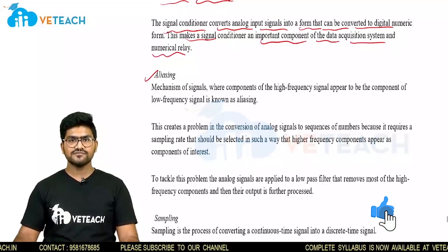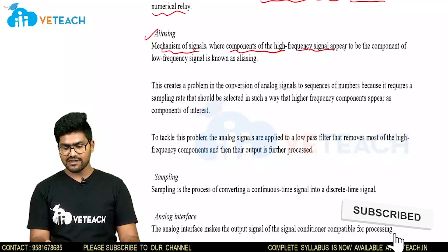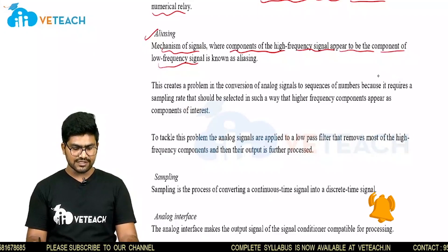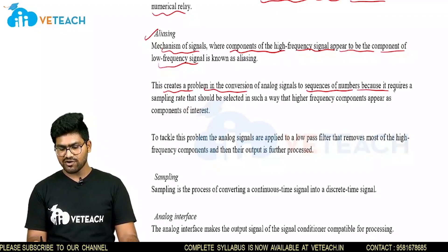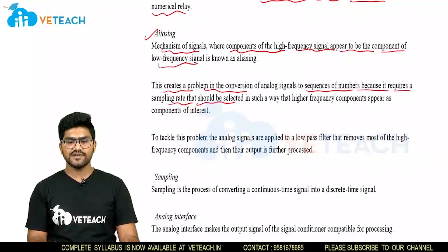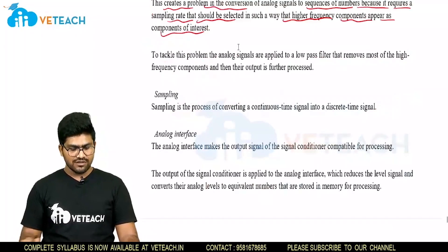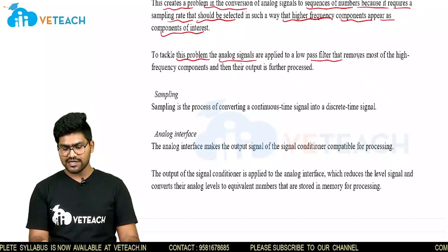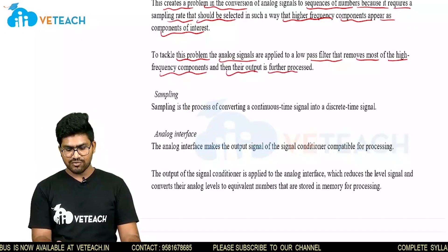Coming to aliasing — it is a mechanism where components of a high frequency signal appear as components of a lower frequency signal, which is known as aliasing. This creates a problem in the conversion of analog signals to a sequence of numbers, because it requires a sampling rate selected in such a way that higher frequency components do not appear as components of interest. To tackle this problem, the analog signals are applied to a low pass filter that removes most of the high frequency components, and then their output is further processed.